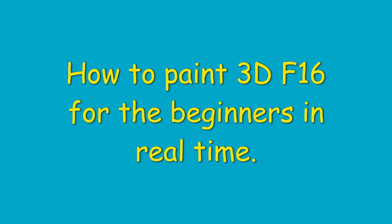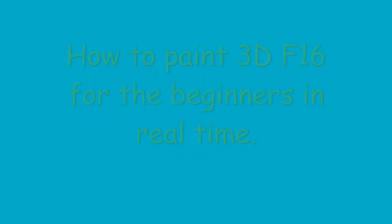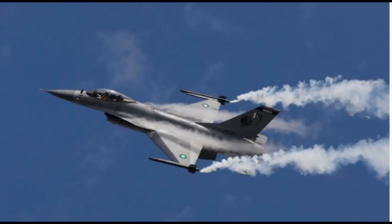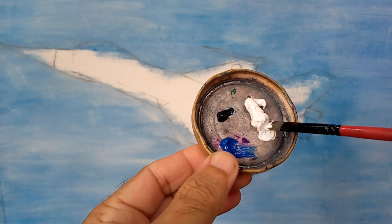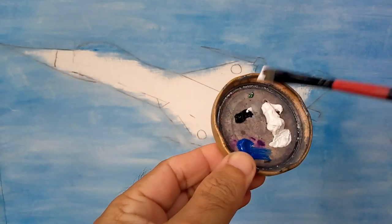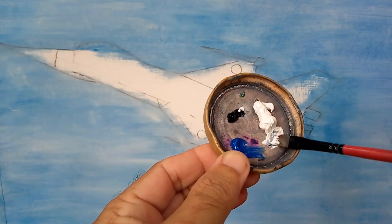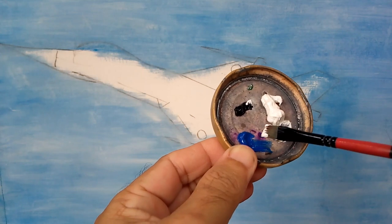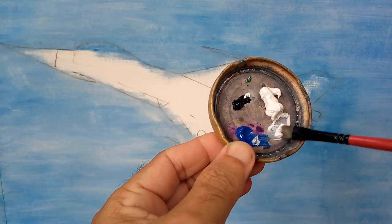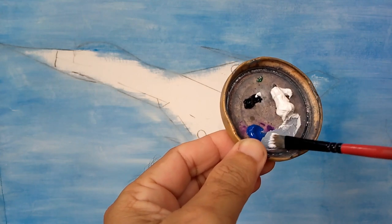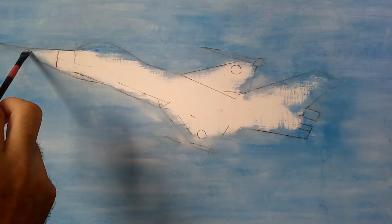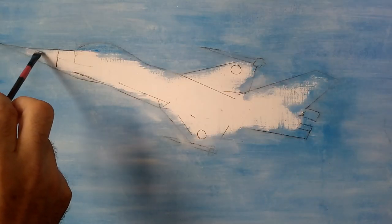Asalaamu Alaikum, my dear viewers — how are you? I hope all of you are fine and happy. This special video is uploaded for beginners to learn how to paint a 3D effect. First of all, paint the background with a light blue shade and let it dry for at least one week.